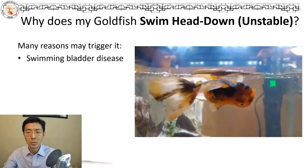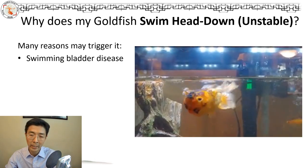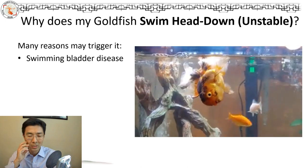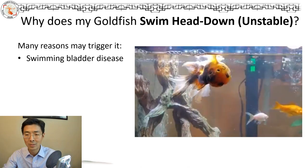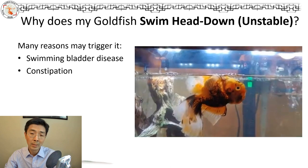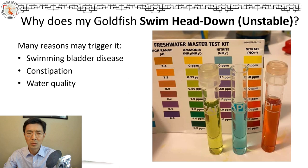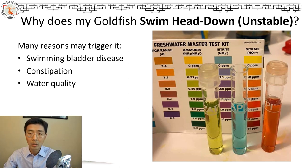One issue is when your goldfish has a pretty big swim bladder and is floating on top — it's just suffering, like this poor goldfish. The second reason is constipation, which is one of the reasons that actually triggers swim bladder disease. The third reason could be just the water quality — ammonia, nitrite, or nitrate — the parameters are just not right.